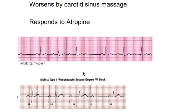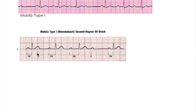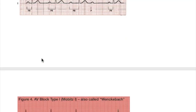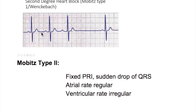This is also Mobitz type 1 — here is the missing QRS and this is progressively increasing PR interval. These ECGs show a second degree heart block Mobitz type 1 with progressively increasing PR interval, but then there is a QRS missing as well as a P wave missing. So this is an example of the second degree block where the P wave is also missing along with a QRS complex.